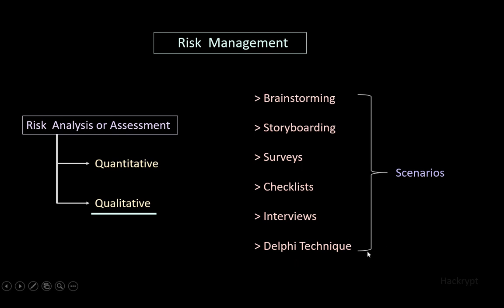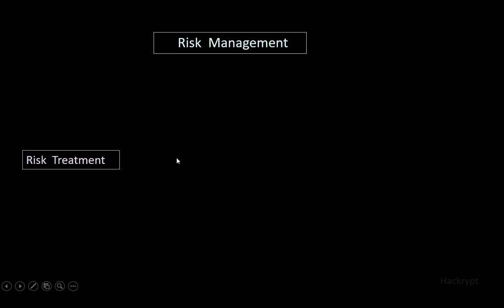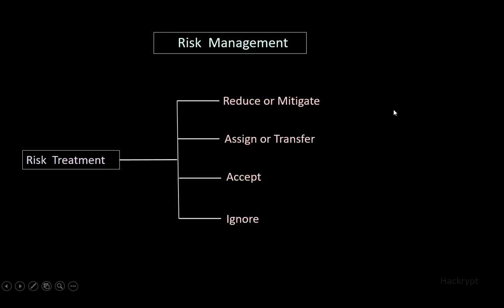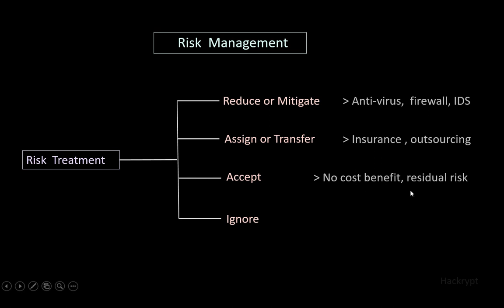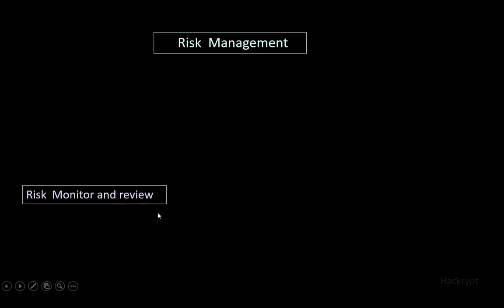In risk treatment we respond to risk in four ways: we can reduce or mitigate the risk using safeguards like antivirus, firewall, or IDS; or assign or transfer the risk through insurance or outsourcing; or accept the risk if there is no cost benefit — also called residual risk; or ignore the risk, which means no due care has been taken and creates high liability. The last stage is risk monitoring and review — since new threats and vulnerabilities can emerge, it is important to reassess risk on a periodic basis.